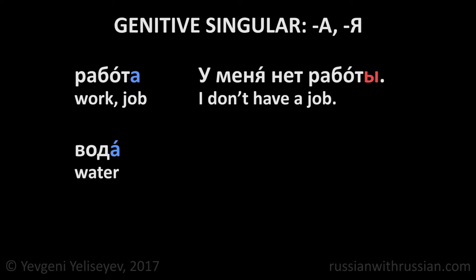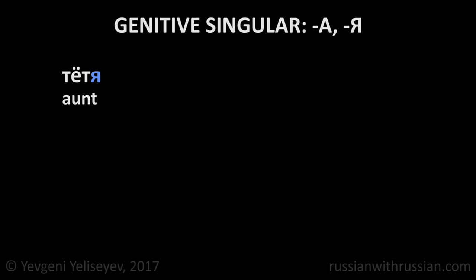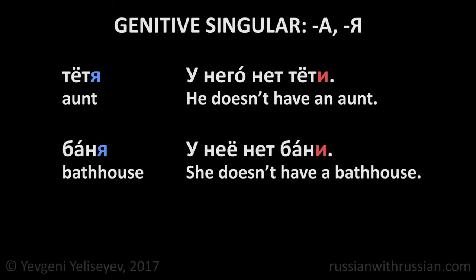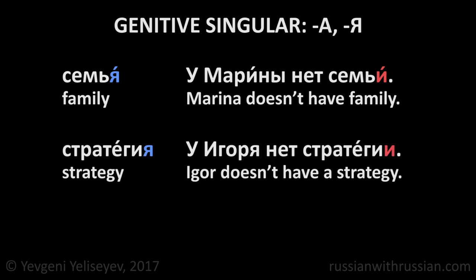Вода. У нас нет воды. We don't have water. Тётя. У него нет тёти. He doesn't have an aunt. Баня. У неё нет бани. She doesn't have a bathhouse. Семья — family. У Марины нет семьи. Марина doesn't have family. Стратегия — strategy. У Игоря нет стратегии. Игорь doesn't have a strategy.